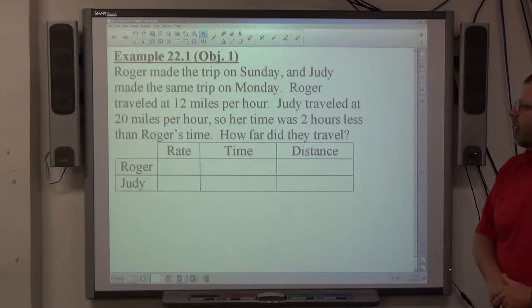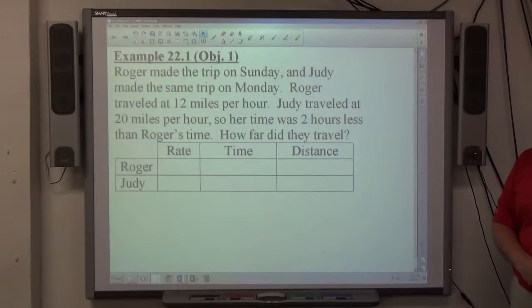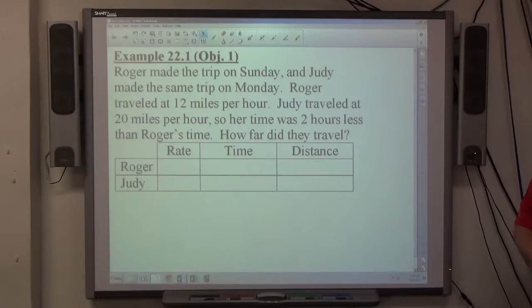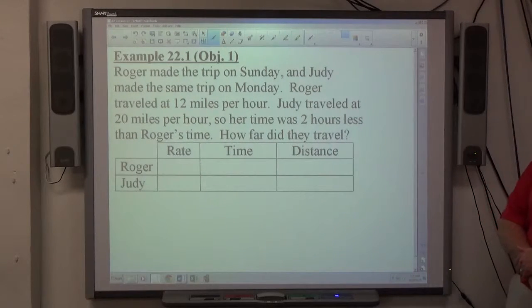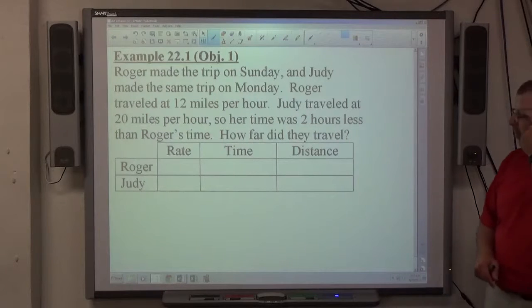Okay, example 22.1. Roger made the trip on Sunday and Judy made the same trip on Monday. Roger traveled at 12 miles per hour, Judy traveled at 20 miles per hour, so her time was two hours less than Roger's time. How far did they travel?